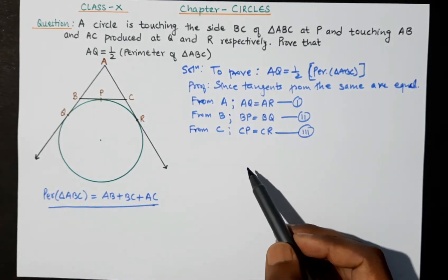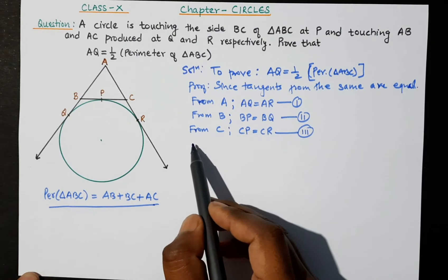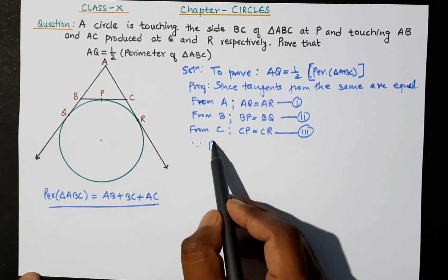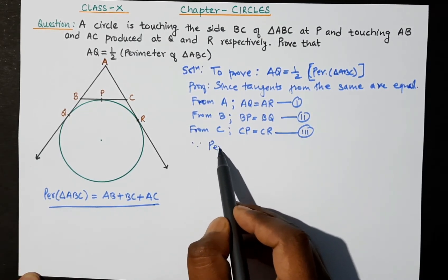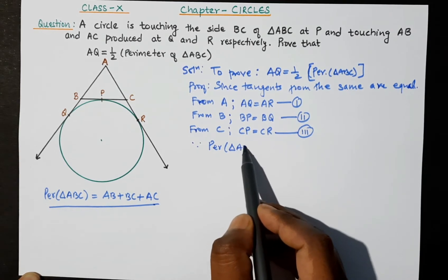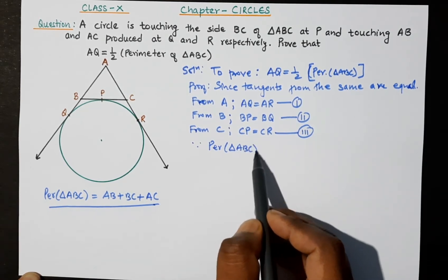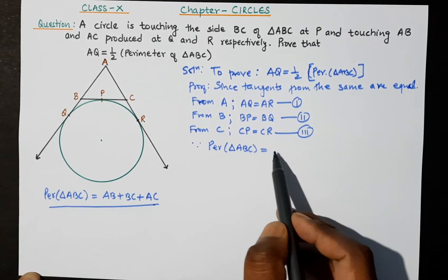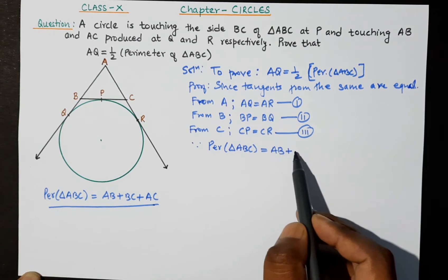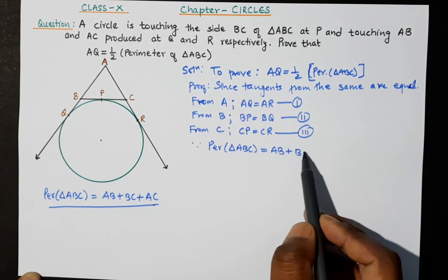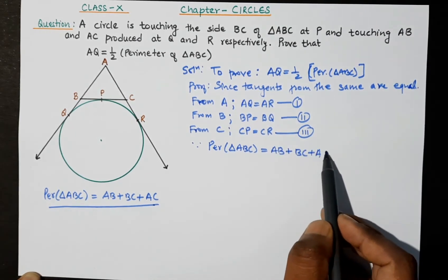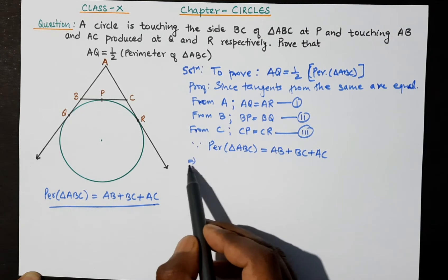Now, the perimeter of triangle ABC equals AB plus BC plus AC.